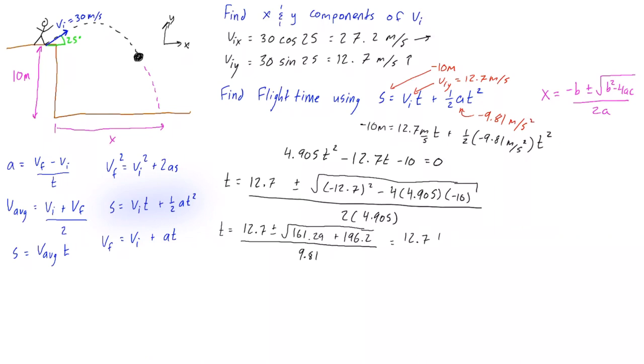If we just crunch the rest of that, we find that t is equal to 3.2 seconds, or also negative 0.63 seconds. Because we're dealing with time, we know that the negative root is not the right one. So it actually takes 3.2 seconds for the ball to go up and then come back down and strike the ground.